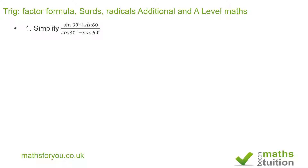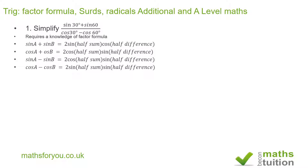To do this you need to remember your factor formulae — there are four of those. For the numerator we're going to use the first factor formula. When it refers to the difference or half the difference, you're looking at the first number minus the second, so you should expect negative values at some stage.